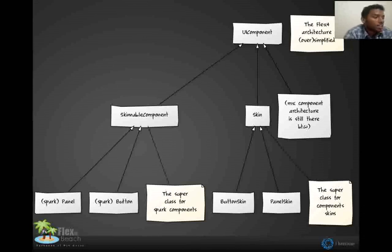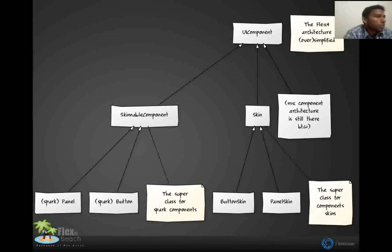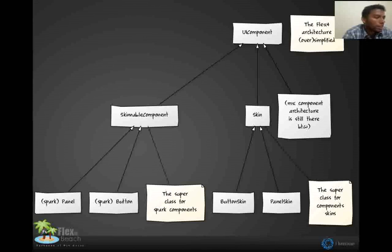SkinnableComponent is the base for all skinnable components, like a panel, button, or custom components. If you want to skin your component, you should extend SkinnableComponent. The Skin class extends from UIComponent and is the base for all skin components — for example, the default button skin and panel skin both extend from Skin. If you want to develop a new skin, it should extend from Skin.